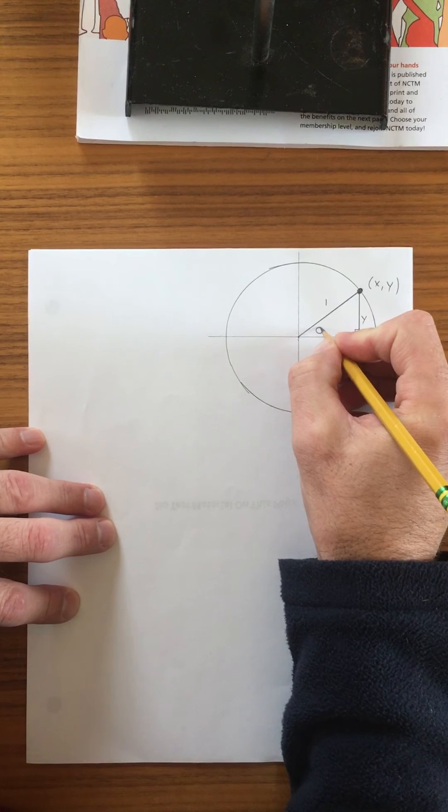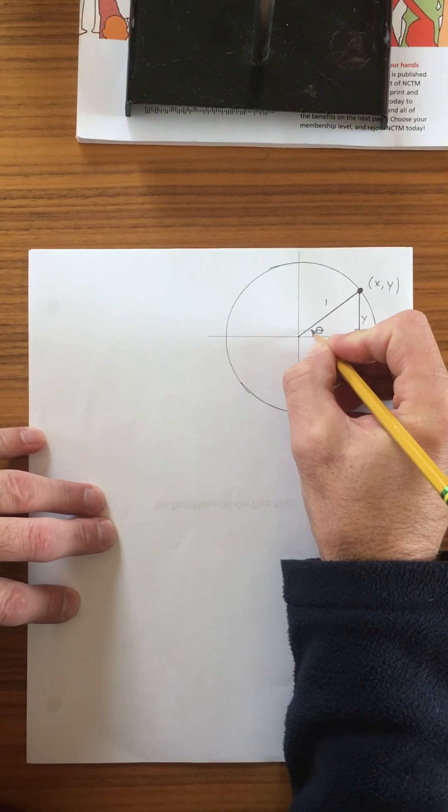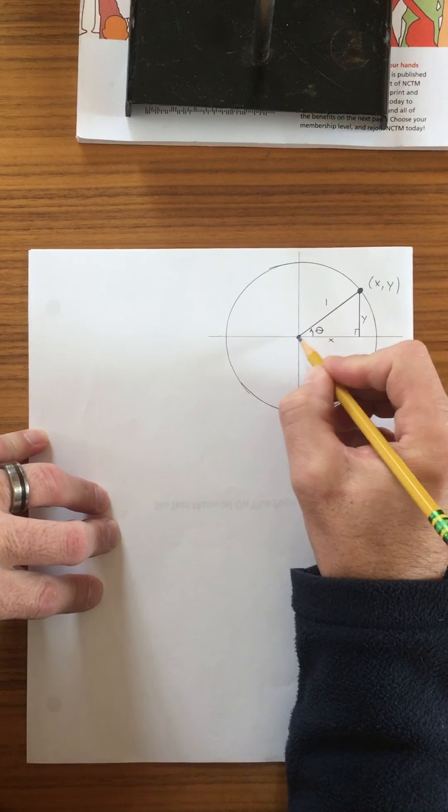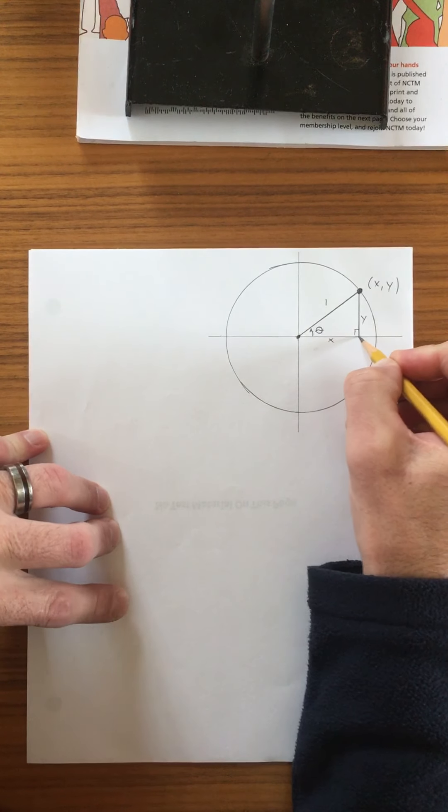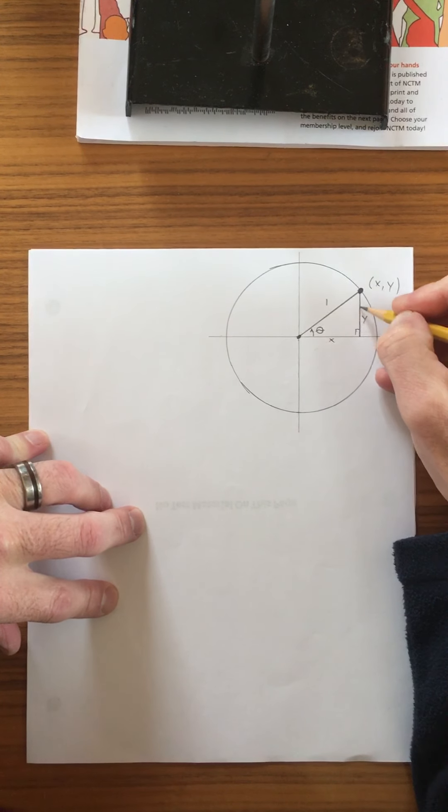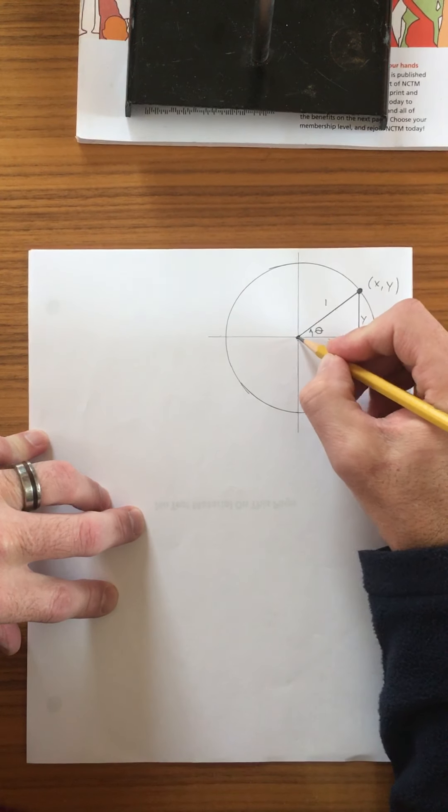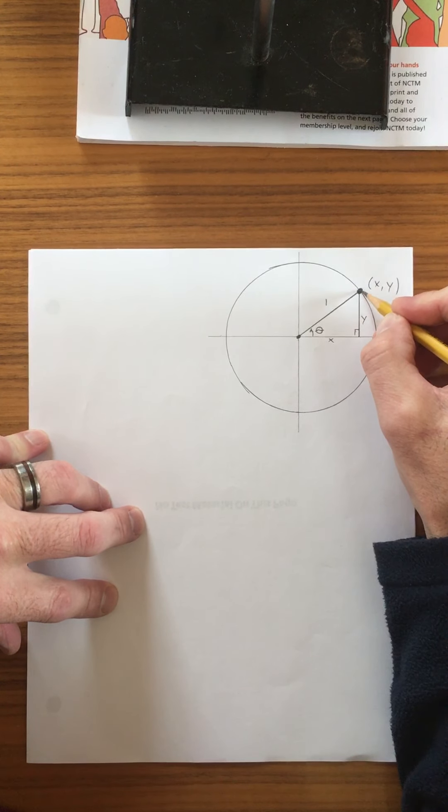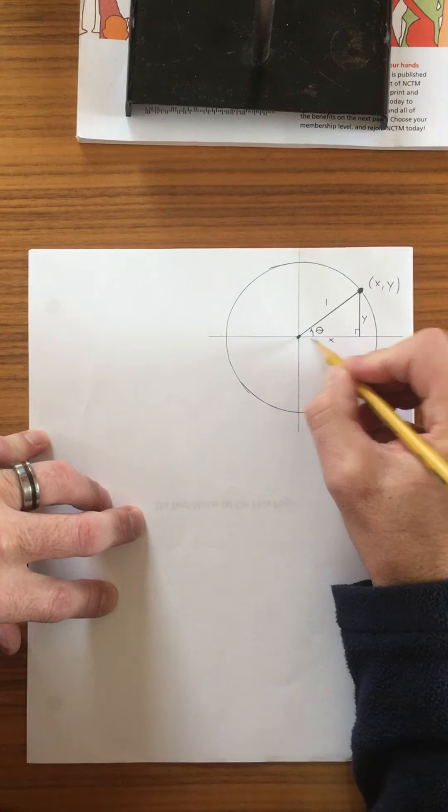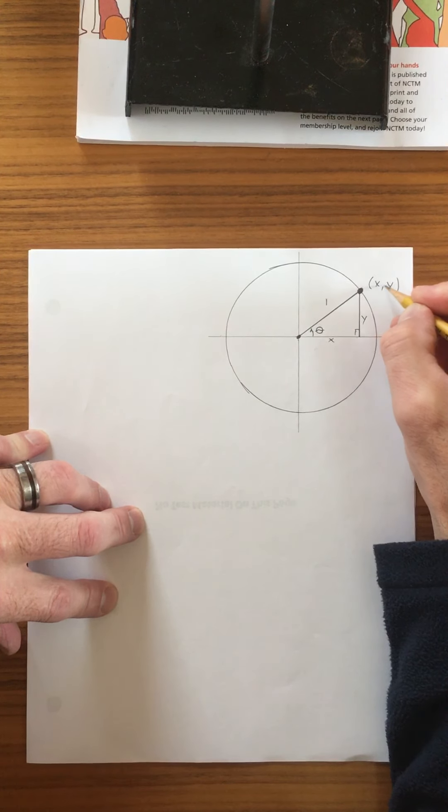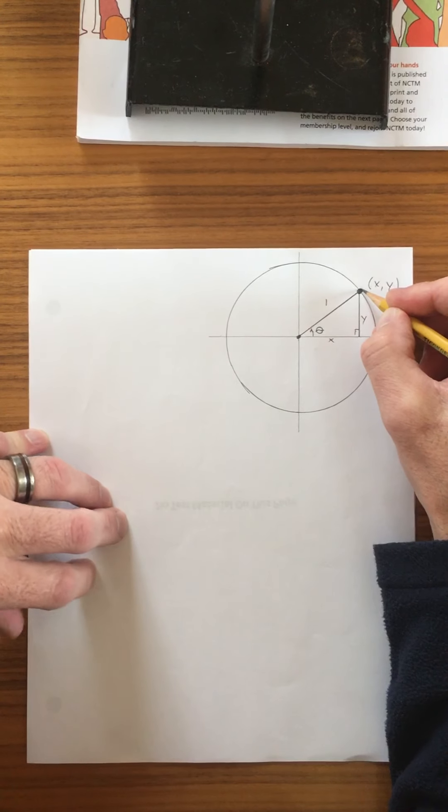And for any angle theta, there is an amount in the x direction and an amount in the y direction that you would go to get from the origin out to that point. And so that x distance and that y distance is the coordinate of that point.